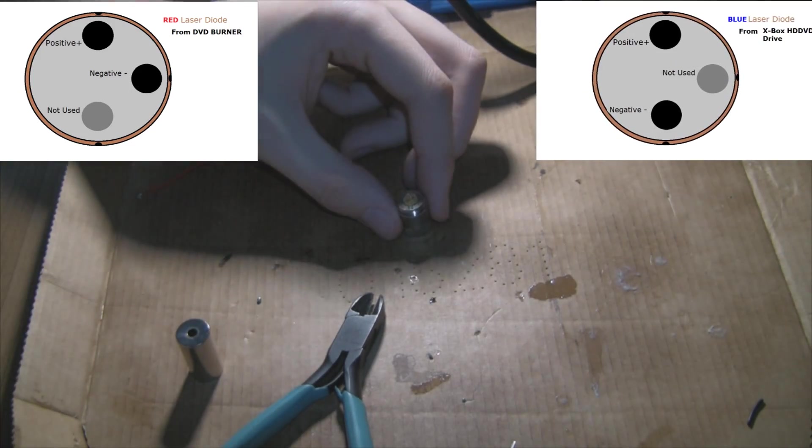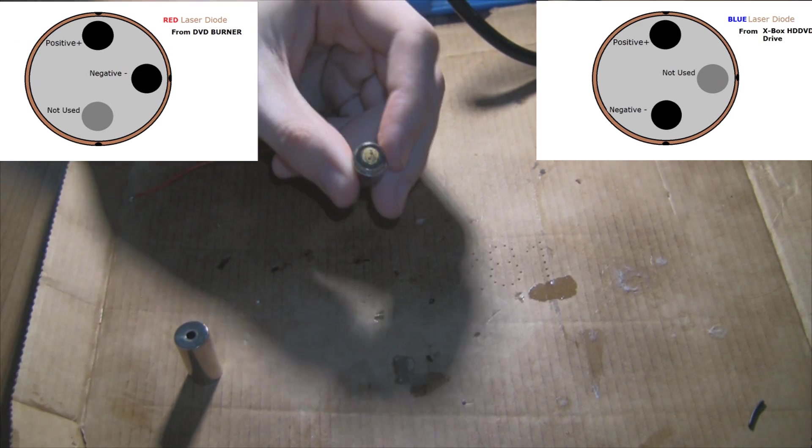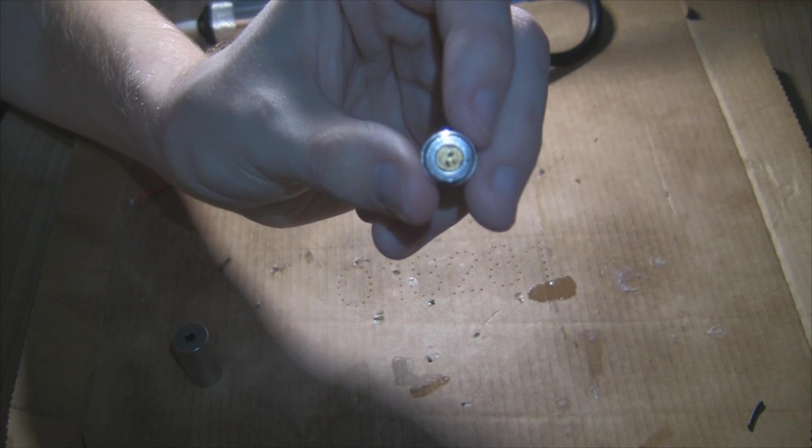Next, you need to work out the pin out of your diodes. So I put the red on the left and the blue from the HD DVD drive on the right.